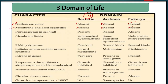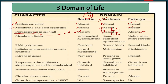Third character: peptidoglycan cell wall. In the case of true bacteria (Eubacteria), the cell wall is made up of peptidoglycan. In Archaebacteria, the cell wall is made up of polysaccharides plus protein. In the case of Eukaryotes, the cell wall is not made from peptidoglycan — it may be present but is made of other materials.